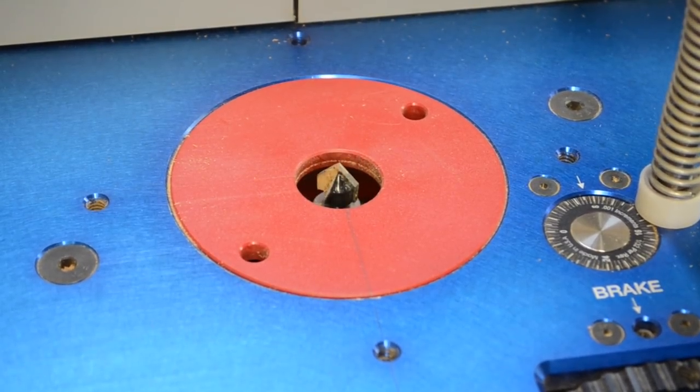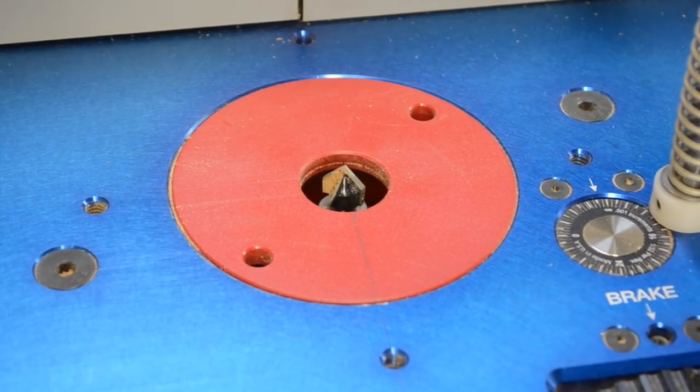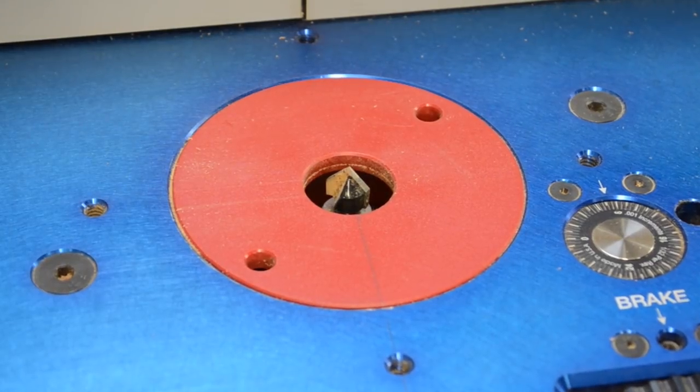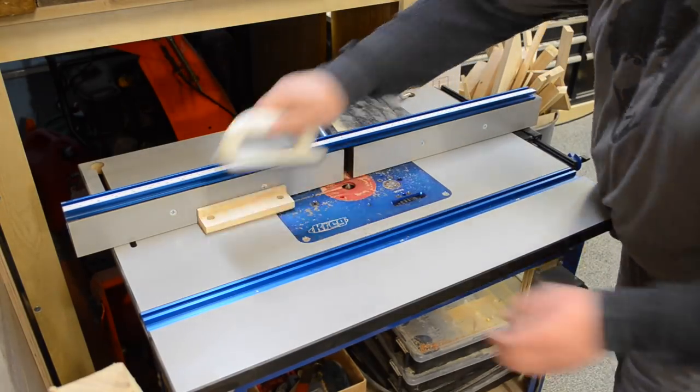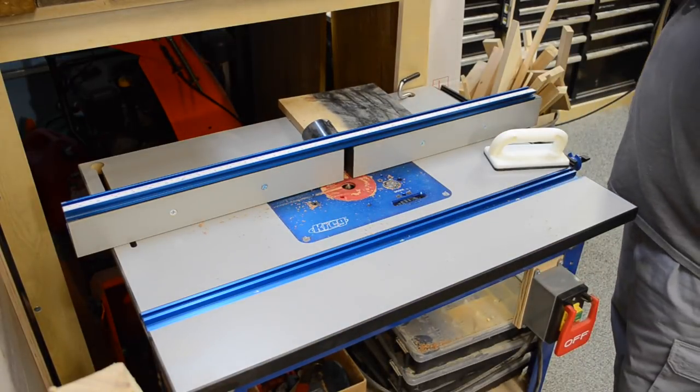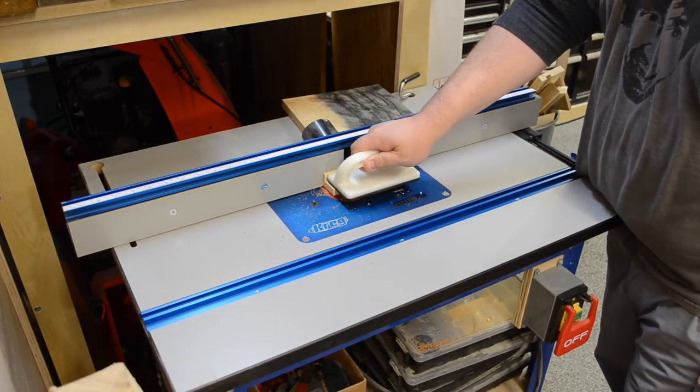Then with a v-groove bit in my router table, I could run my pieces past that and that was going to create a little bit of a channel. That way if I was trying to secure any dowel or brass rod or anything like that, it would give a spot for that and just kind of make it a better secure clamping surface.